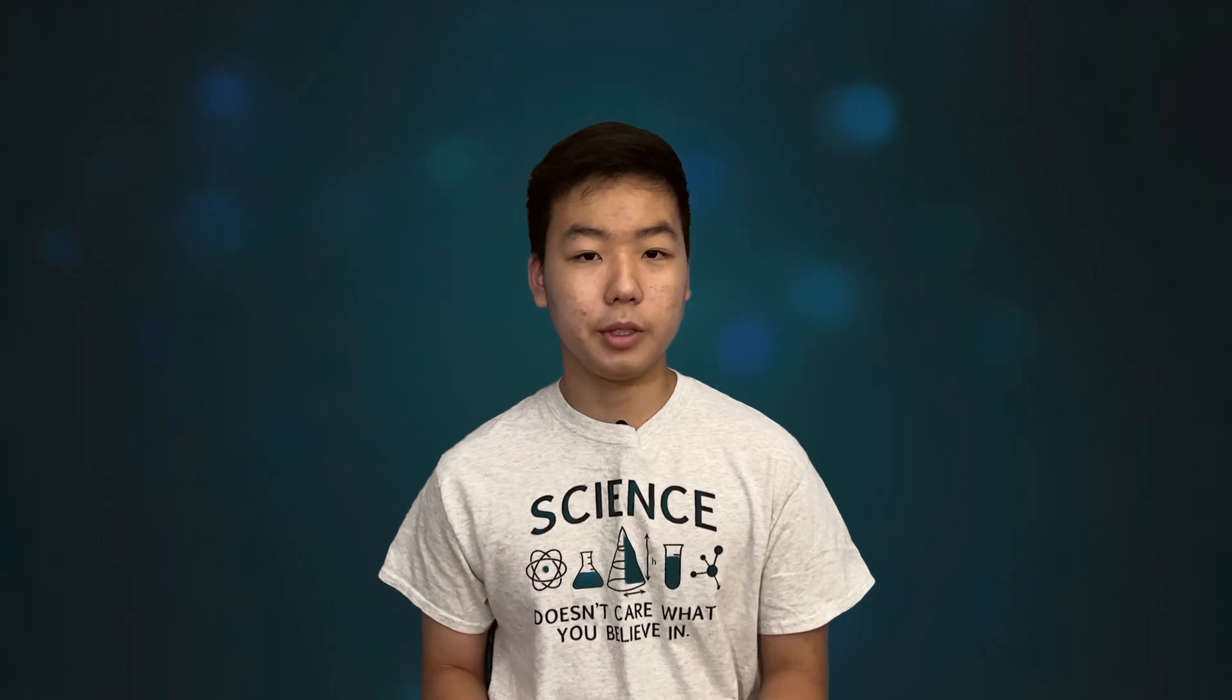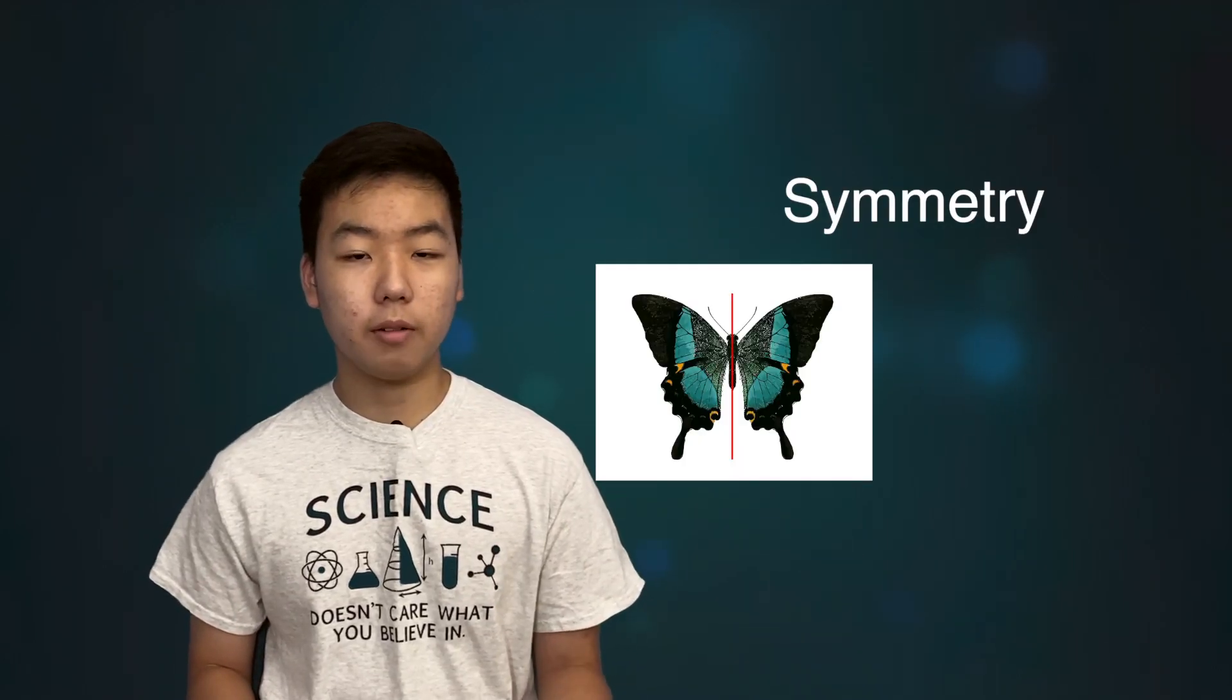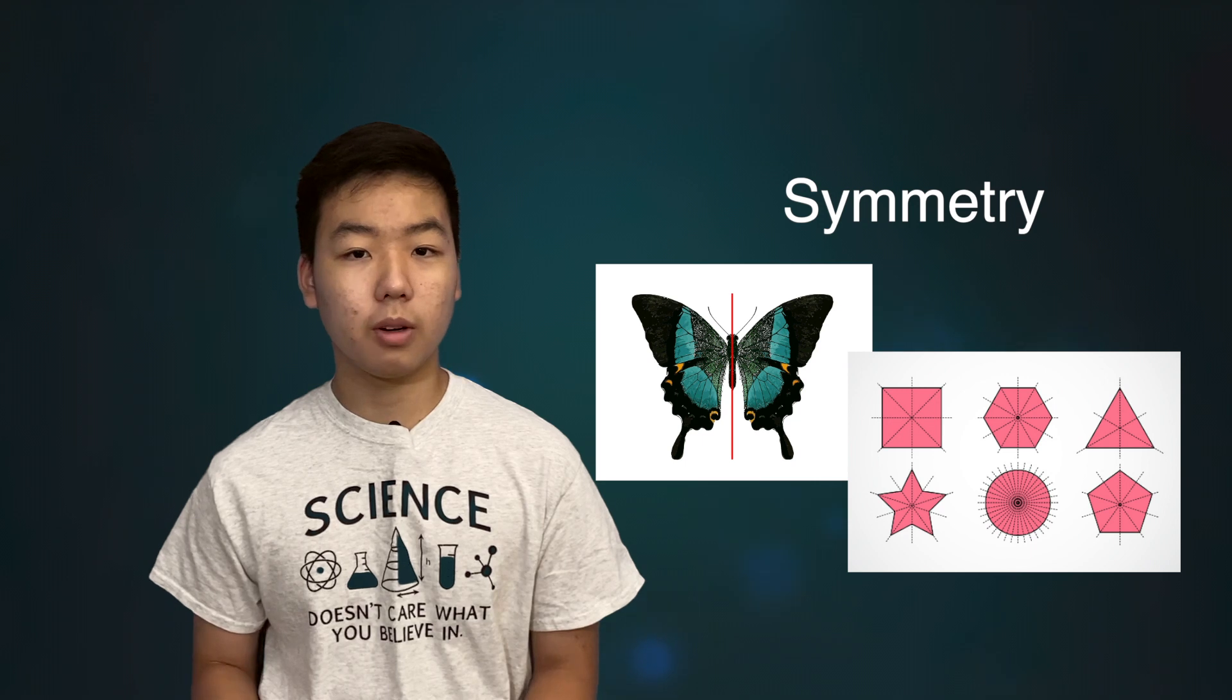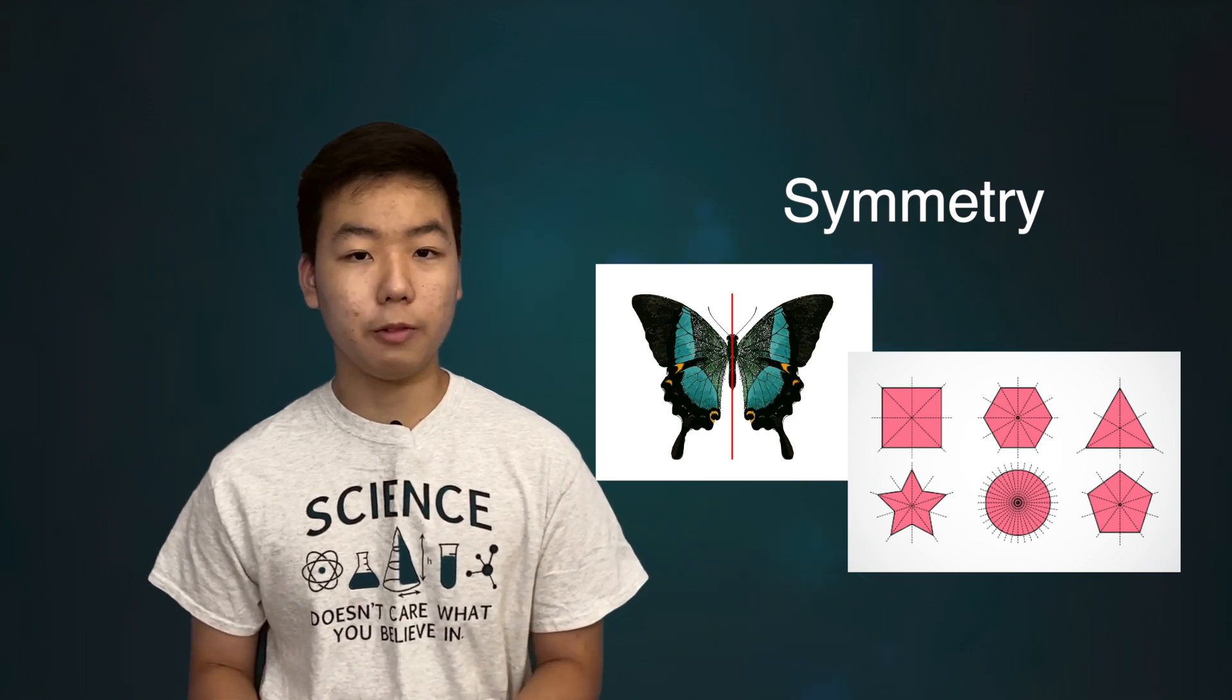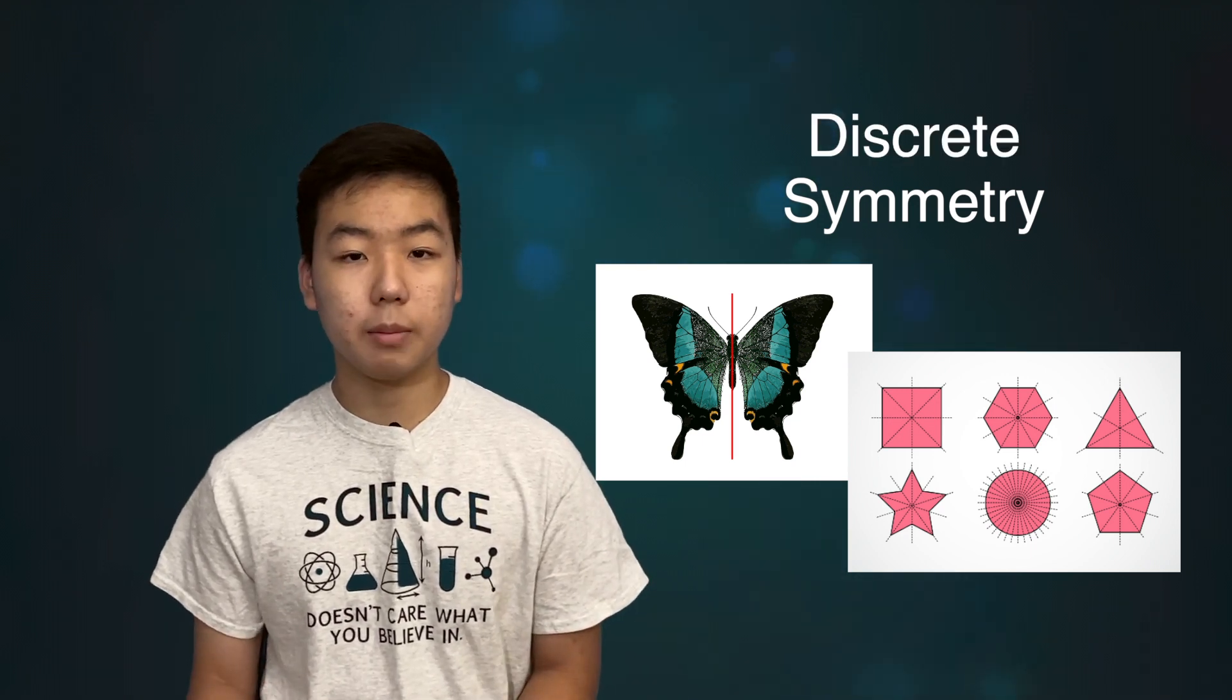So what does that mean? Well, first let's talk about symmetry. When we think of symmetry, we usually think of a butterfly, or geometric shapes, or anything else that looks the same when reflected. That's discrete symmetry.